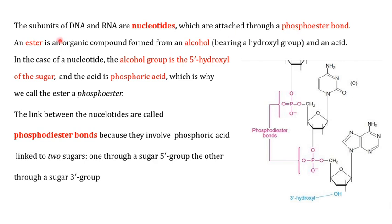An ester is an organic compound that is formed from an alcohol — that means bearing a hydroxyl group — and an acid. So in an ester you have two things: an alcohol group and an acid. When you talk about nucleotides, this alcohol is actually the five prime hydroxyl of the sugar, and the acid is the phosphoric acid.